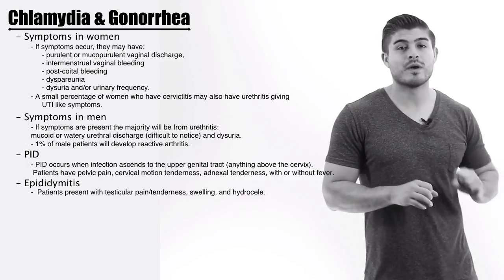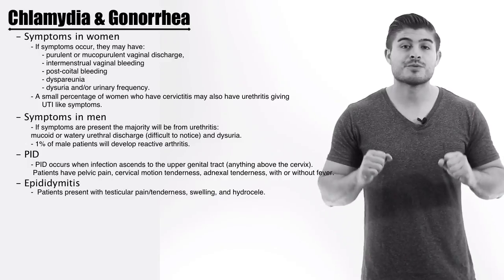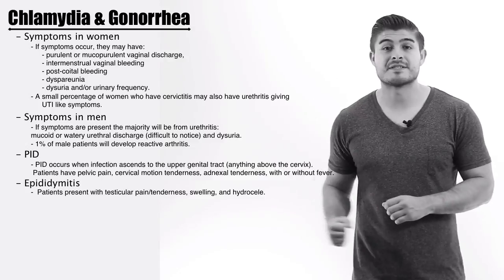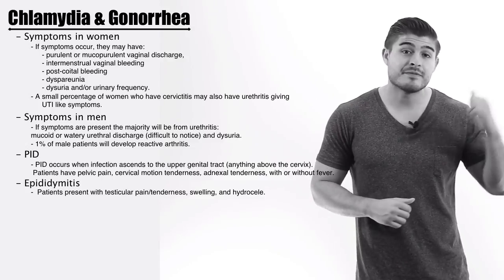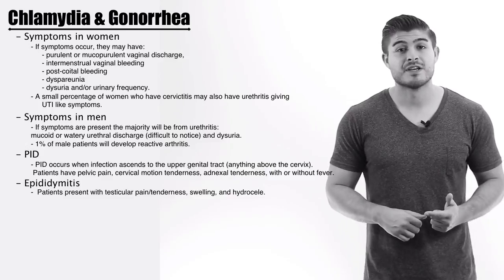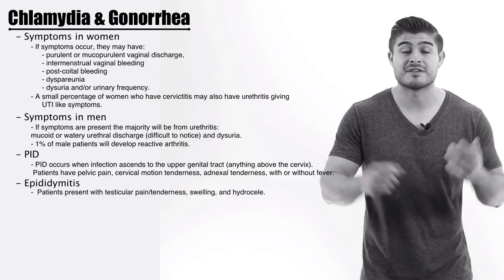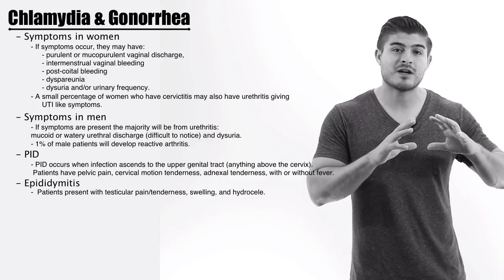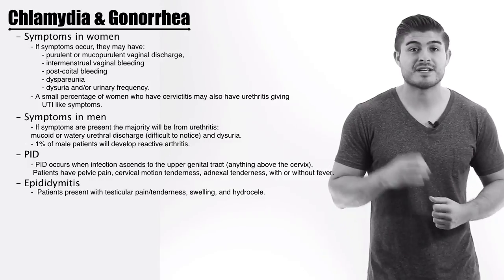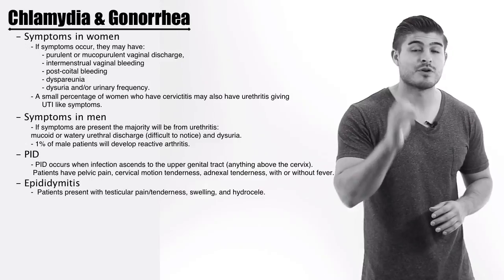Chlamydia and Gonorrhea can also present outside of the vaginal canal and outside of the penis as well. Patients can even present with pharyngitis and conjunctivitis — Chlamydia infection of the throat and Chlamydia/Gonorrhea infection of the eyes. It's not fully known how common this is with pharyngitis and conjunctivitis, but it's important to note it as a possible cause.